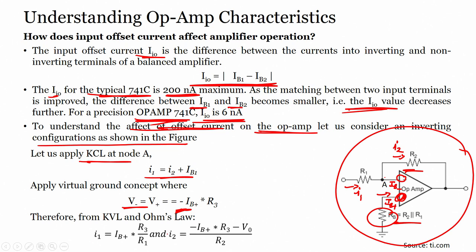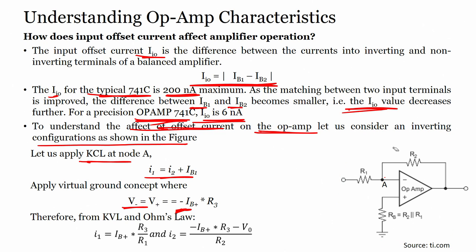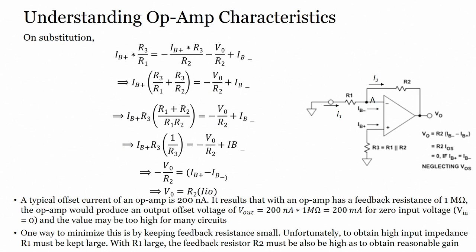From Kirchhoff's current law, I1 = IB+ × R3/R1 and I2 = -IB+ × R3/R2 minus VO divided by R2. On substituting the values, we get IB+ × R3/R1 = -IB+ × R3/R2 - VO/R2 + IB-. Solving this equation, VO = R2 × IIO.